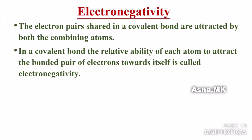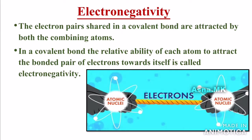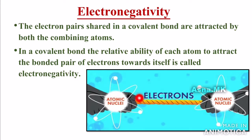Electronegativity is different from electron negativity. Electrons have two atoms. This is one atom — this is the root of the atomic model, the spin model.